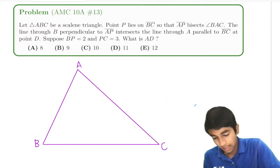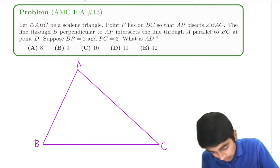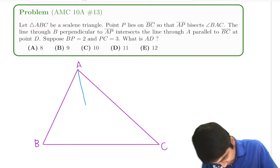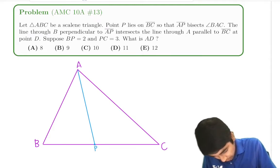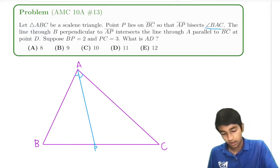Point P lies on BC such that AP bisects angle BAC. So AP, that will be the angle bisector. These angles are equal because AP bisects BAC, which is this angle.